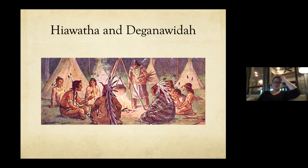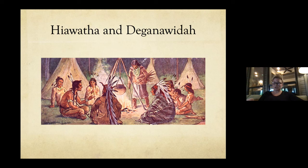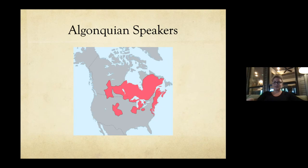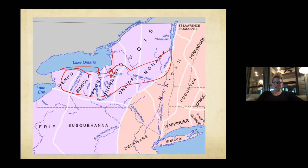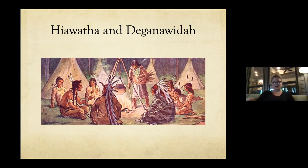Women cared for the long houses — some as long as 100 yards — and planted and harvested corn, beans, squash, and tobacco, watched children, and crafted clothes and pottery. Men prepared cornfields, caught fish, hunted, and handled war diplomacy. Married couples lived with the wife's family, and property was inherited from the mother's brother.